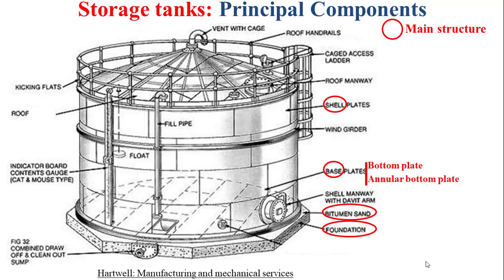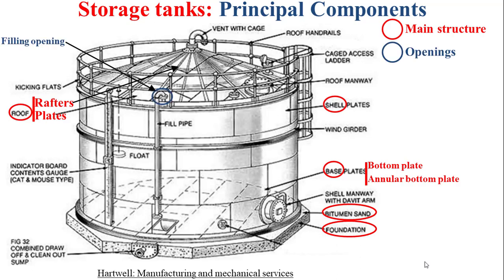We have the shell composed of welded shell plates, and we have the roof composed of rafters that hold the roof cladding, which is composed of welded roof plates. The storage tank is also composed of openings: we have the filling opening via the fill pipe, and the draw-off opening that can also be used for the clean-out of the storage tank. We have the manways that can be located in the shell and in the roof, and we have the vent opening.